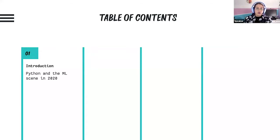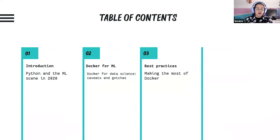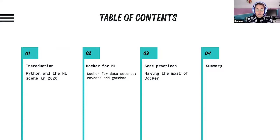Throughout this presentation, there are a couple of things I'm going to be talking about. First, I'm going to give an introduction about the whole Python machine learning scene as of 2020. Then I'm going to move on to Docker for machine learning and data science, and how this might be different from using Docker for other things like web applications. Finally, I'm going to give you some best practices, tips and advice on how you can make the most of Docker when working with machine learning, deep learning, data science, or data-intensive applications. And to close up, I'm going to summarize all of this, giving you my top tips that I've been curating and accumulating from working with machine learning for a few years now.